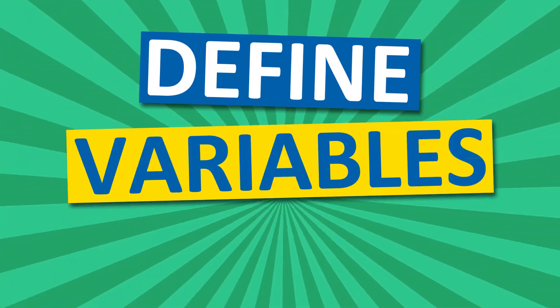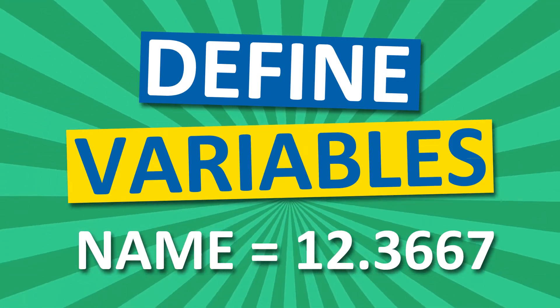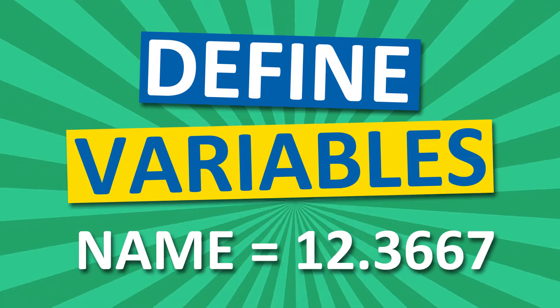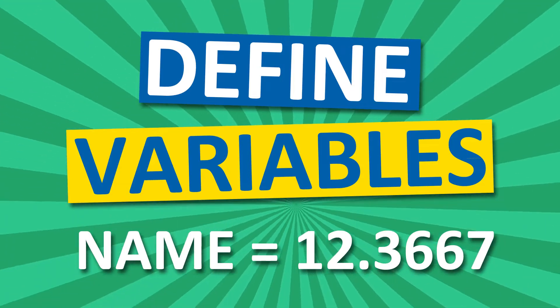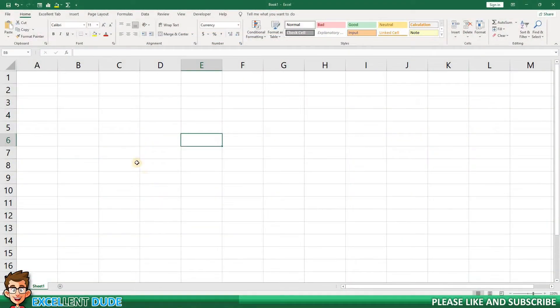Here's how to easily define variables by using a name instead of typing the actual value or referencing a specific cell. For this example, I want to define a variable called sales tax.